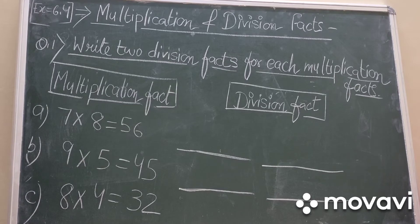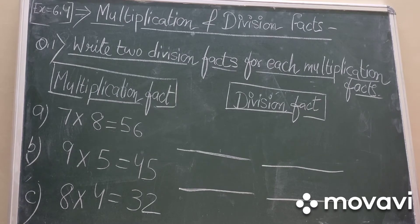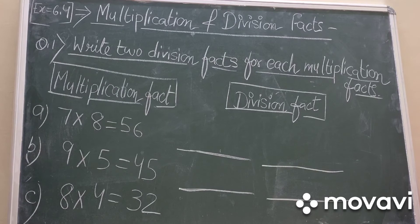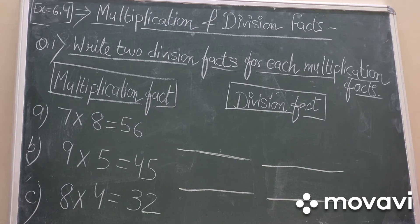The next topic is multiplication and division facts. You know that there are two division facts for every multiplication fact. Similarly, there are two multiplication facts for every division fact. Ek multiplication fact ke liye aap do division fact bana sakti hai, aur ek division fact ke liye do multiplication fact. Let us understand with an example from exercise 6.4.